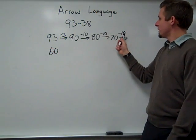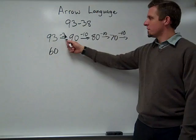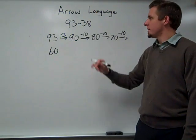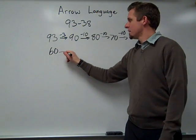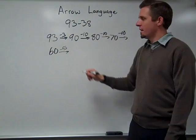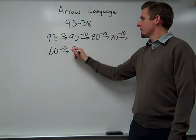So far I've taken away 10, 20, 30, 33. So I need to take away 5 more. I take away 5 more and that gives me 55.